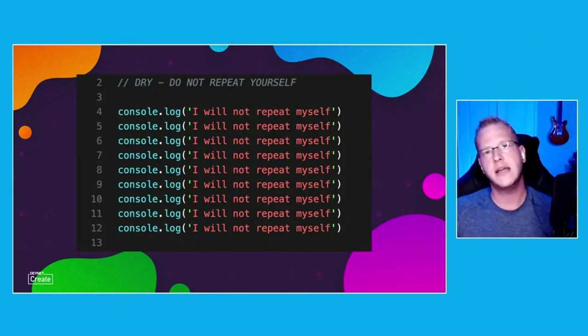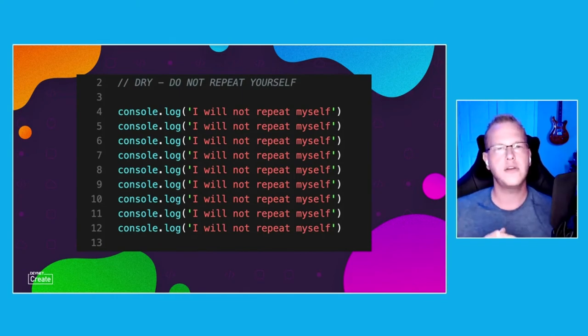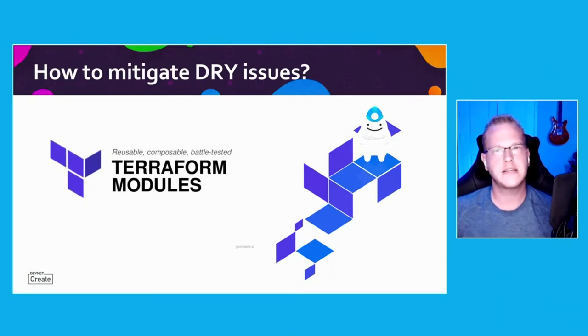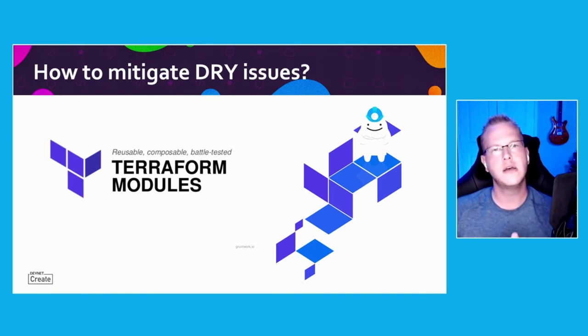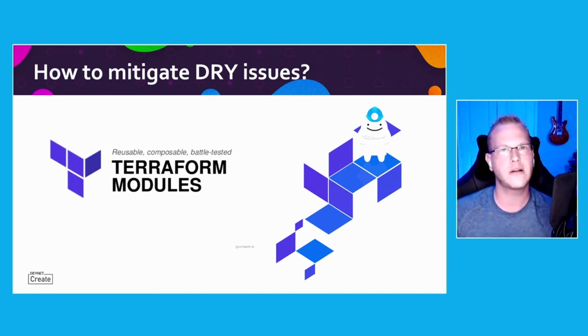DRY — do not repeat yourself — is a big concept in development for building cleaner, more repeatable code. With Terraform, Terragrunt, and other IaC tools, if you have development, production, and staging environments and you're hard-coding values, you end up with multiple copies of the exact same code that you have to update every time. If you clean your code and inject variable values or use Terraform modules or Terragrunt, you create one set of code that you can update and deploy with injected variables — a more repeatable, cookie-cutter approach.